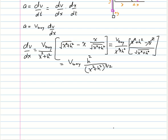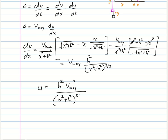So dv/dx = v-boy times h² / (x²+h²)^(3/2). Therefore acceleration a = v-boy times dv/dx = v-boy² times h² / (x²+h²)^(3/2). This is our acceleration expression.